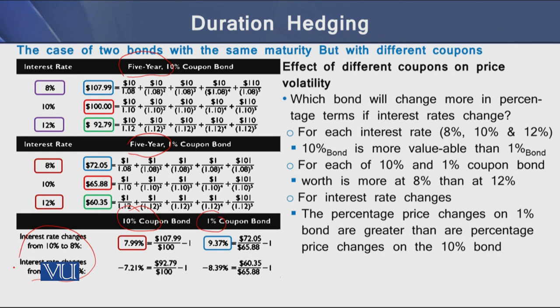Summing up the changes in these panels, we can see that for interest rates of 8%, 10%, and 12%, the 10% coupon bond is more volatile than the 1% coupon bond, as the price movement is much higher for the 10% bond. However, we also see that the percentage price changes on the 1% bond are greater than the percentage changes on the 10% bond.